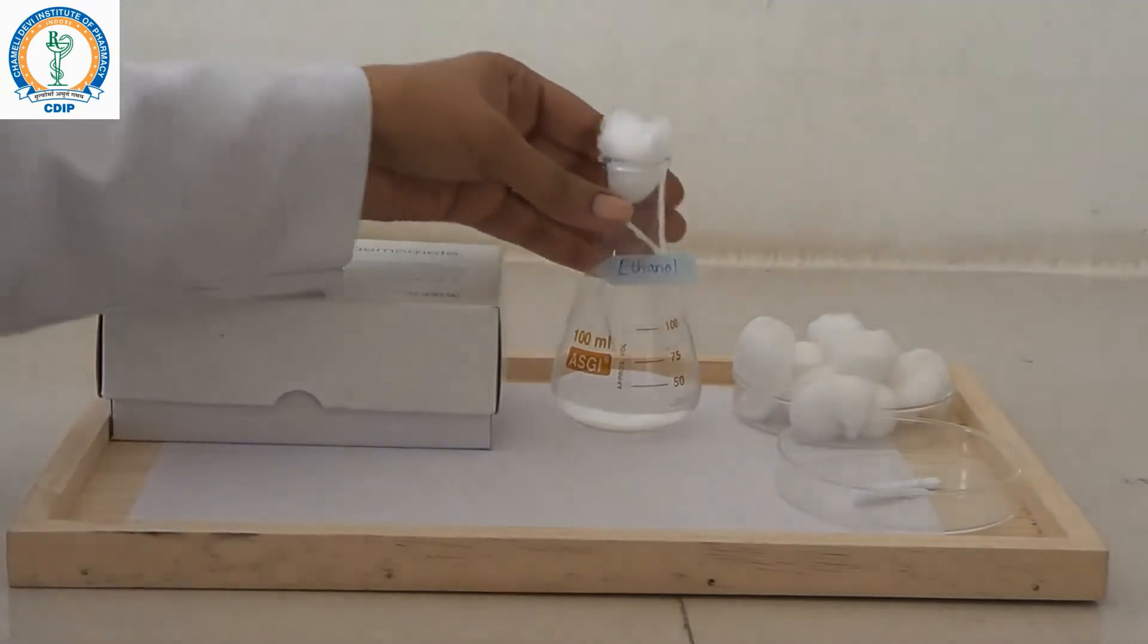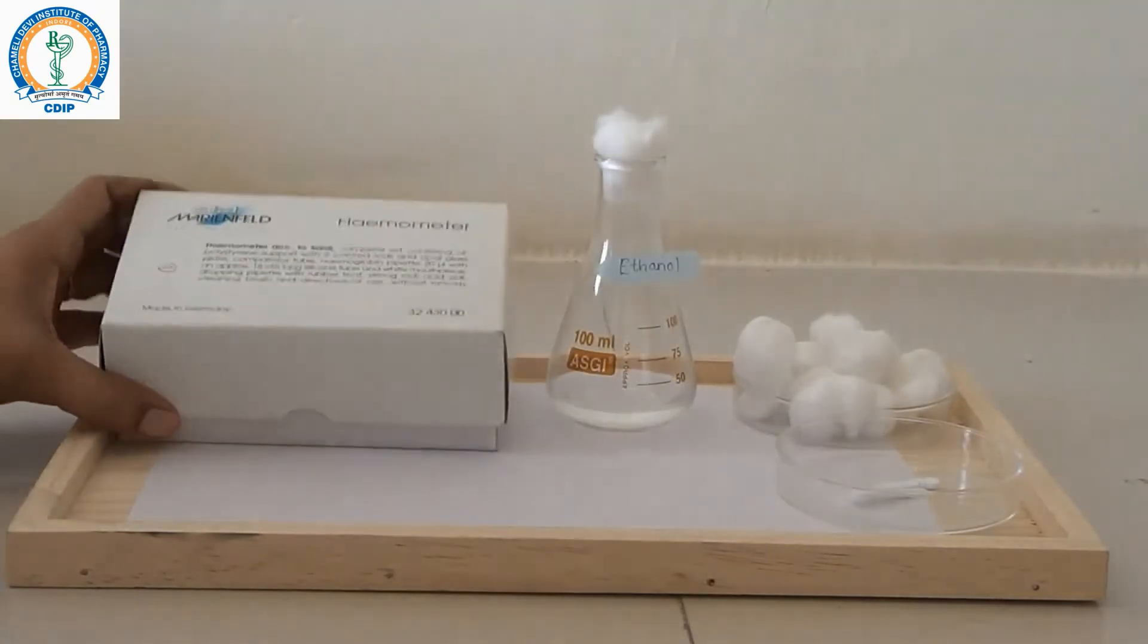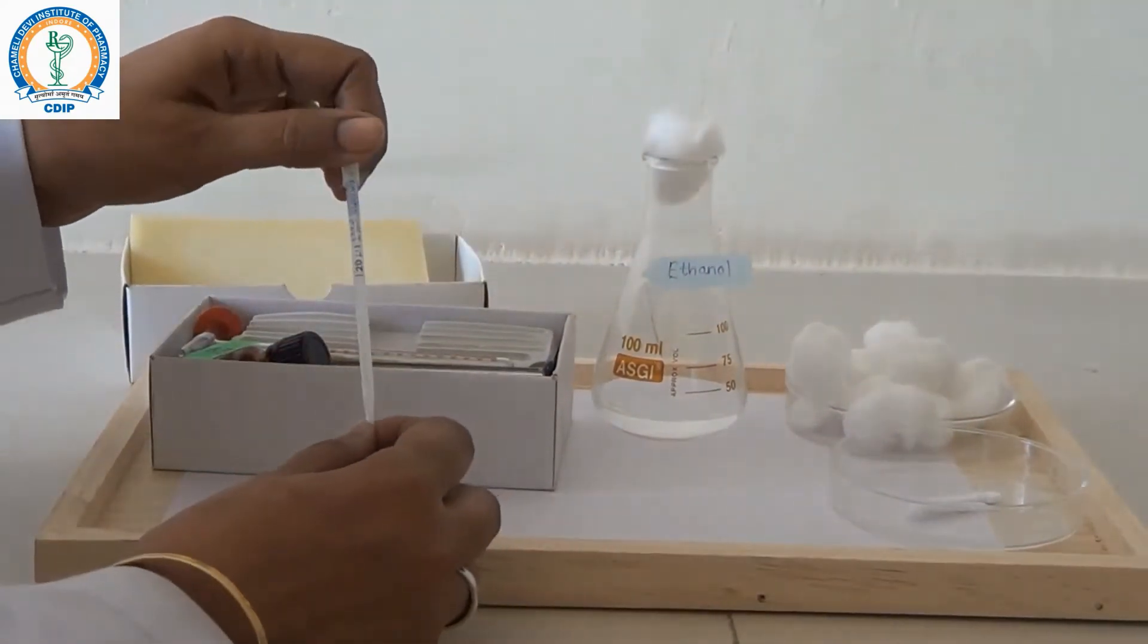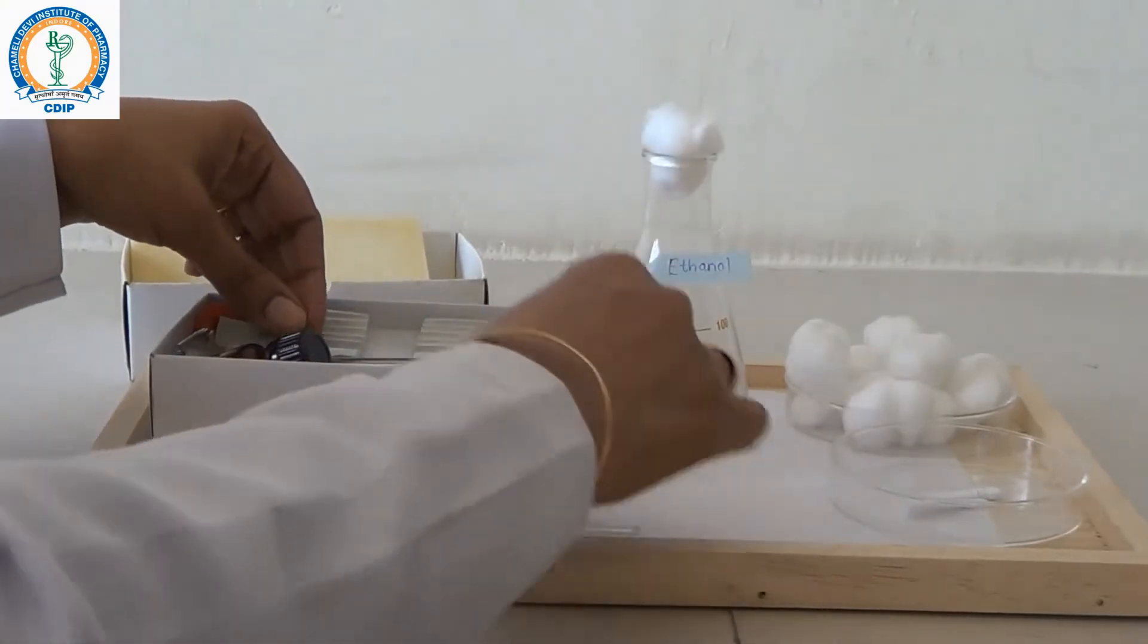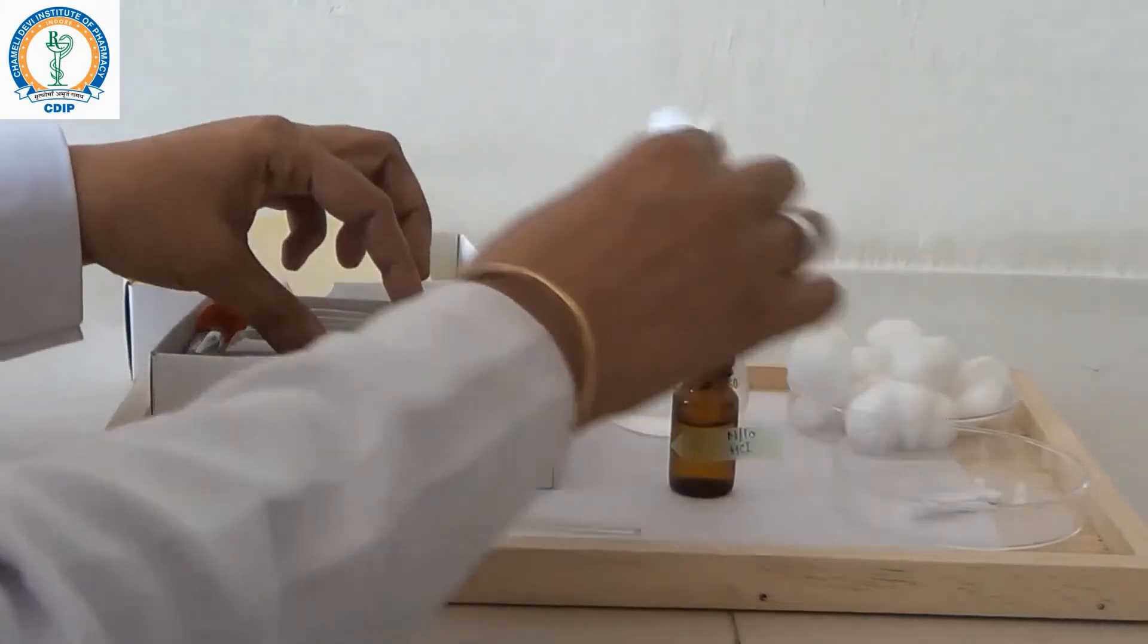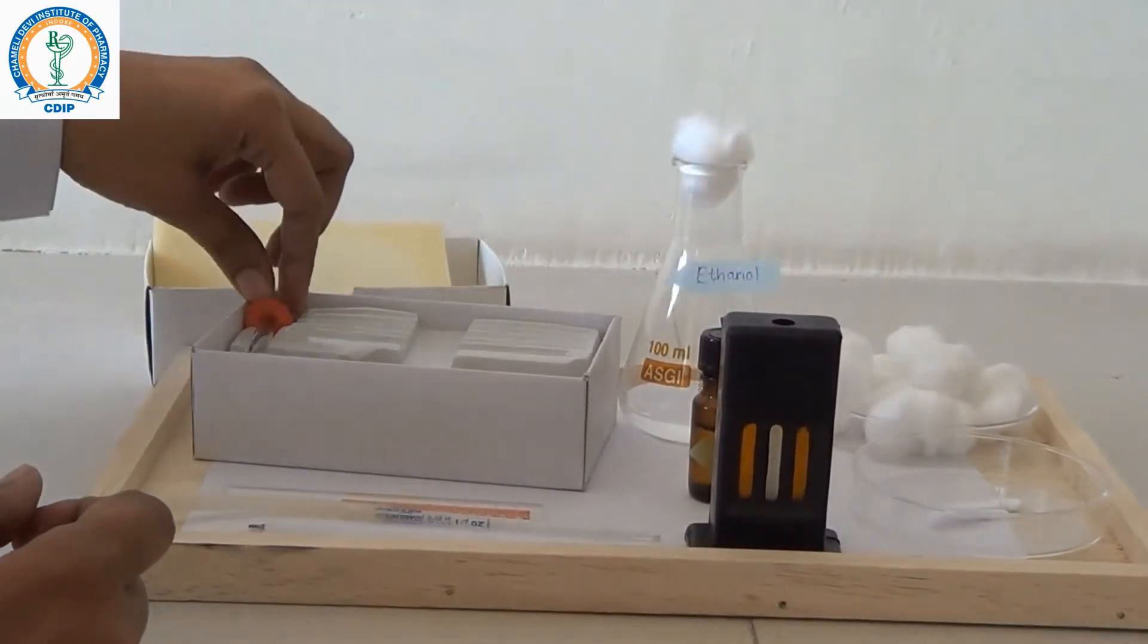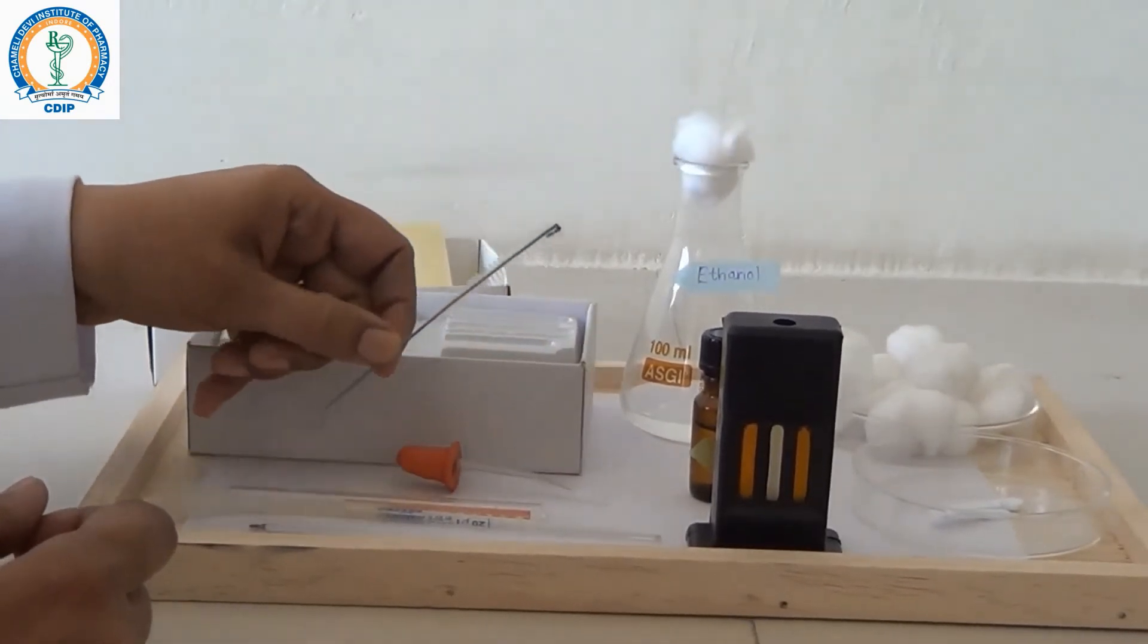For this, we require 99.9% ethanol, cotton, lancet and Sahli's hemometer, which comprises a hemoglobin pipette of 20 microlitre capacity, a graduated tube, N by 10 HCL, mixing rod, a comparator stand, dropper, and a bottle brush for cleansing purpose.